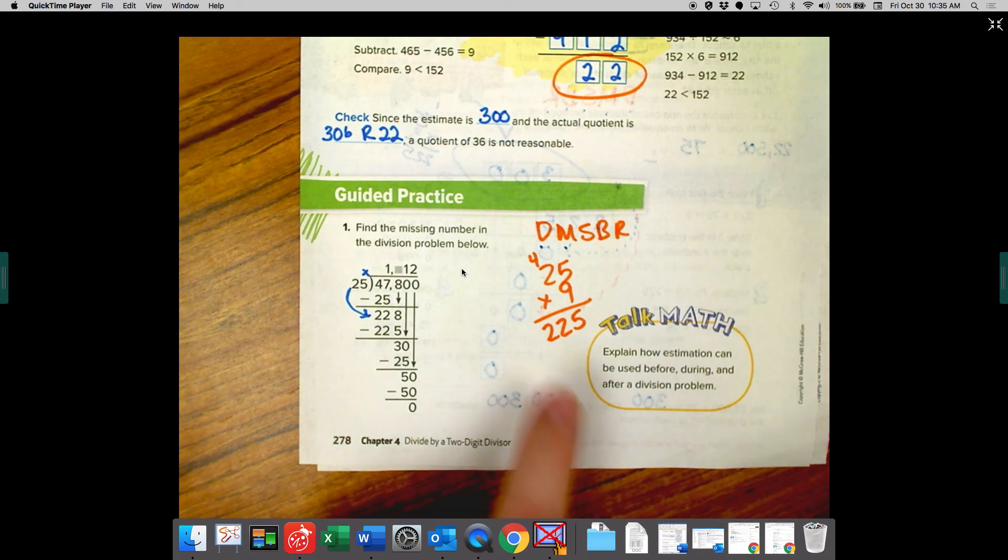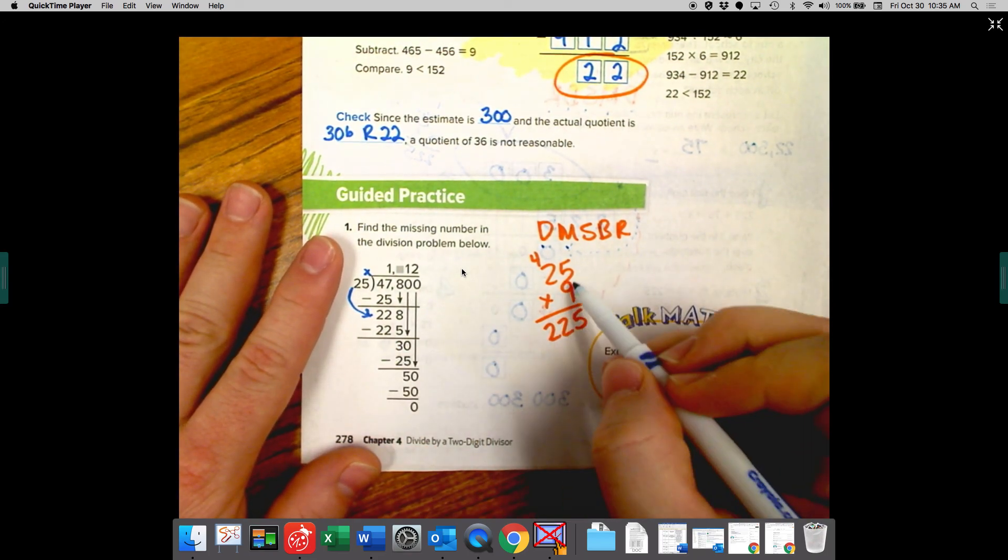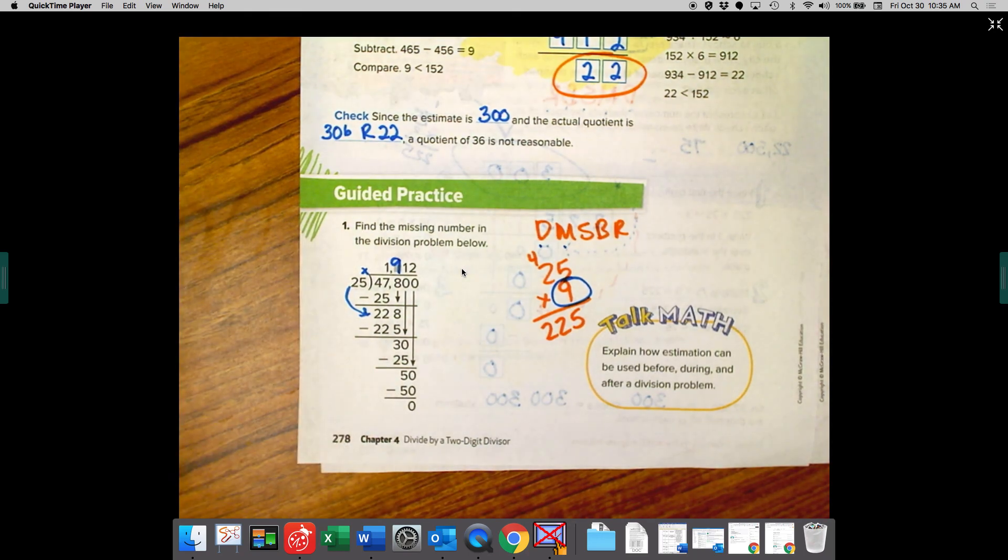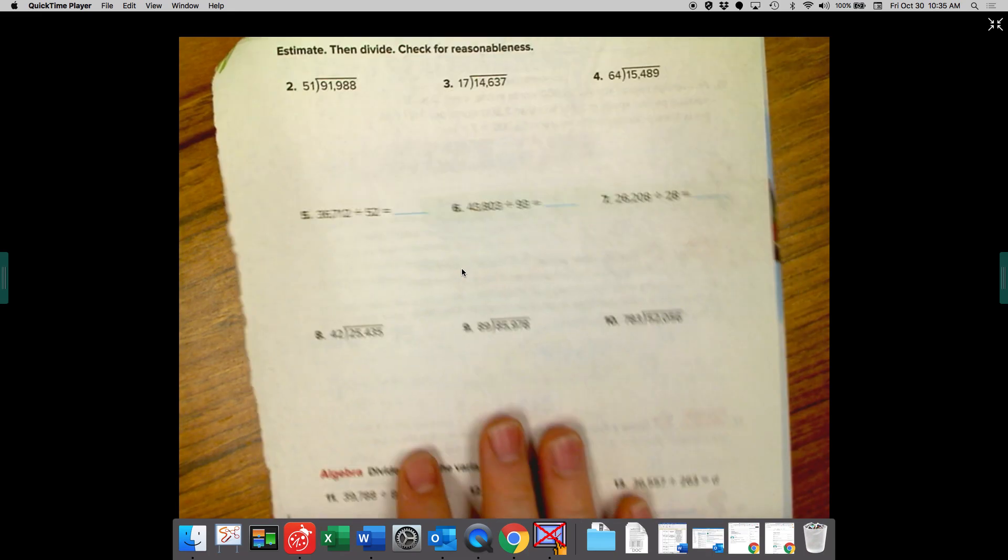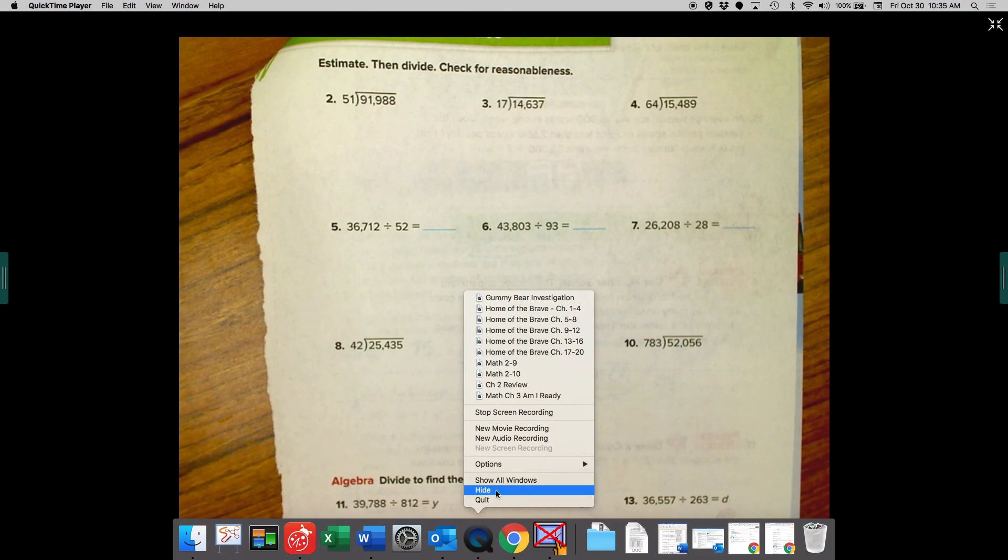All right. So 225. So we're going to minus 225. So the answer they're missing or the number they're missing is nine. You're going to complete page 279 on your own. Good luck. I know you're going to do great. Have a great day and I will see you later.